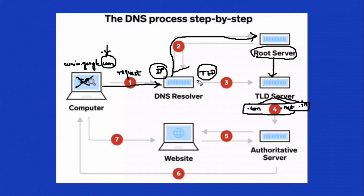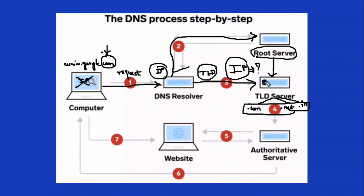The DNS resolver will go to the corresponding TLD name server and ask: do you know what's the IP address to reach google.com? At this point we still don't know the IP address. But then, the TLD name server finds the IP address — it sees that the address to reach google.com is 8.8.8.8. It will provide that as a probable answer, but it needs to be verified, so it will hand it off to the authoritative name server.